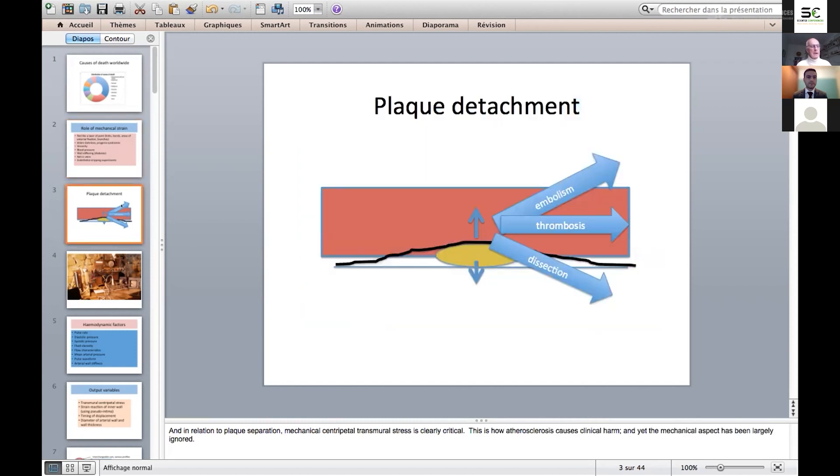We also have experimental work involving endothelial stripping experiments that demonstrates if you damage the arterial wall, you can produce atherosclerosis-like lesions. This adds up to a fair amount of circumstantial evidence that we've got a driving force here that is mechanical strain. And even if we were to discount that, there's little doubt that mechanical strain is important in terms of how atherosclerosis causes harm.